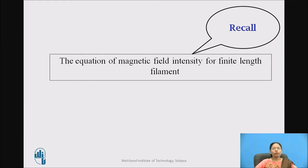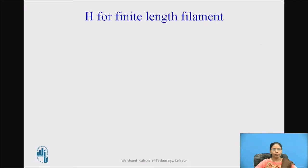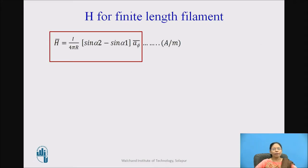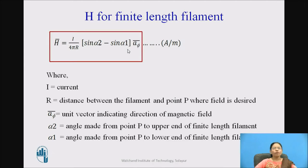We will now proceed to determine H bar for the finite length filament. Recall the equation: H bar equals I divided by 4πR times (sin α₂ minus sin α₁) times A_phi bar, with units of amperes per meter. Here I is current, R is the perpendicular distance between the point and the filament, α₁ and α₂ are the angles made from point P to the lower and upper ends of the filament respectively, and A_phi bar is the unit vector indicating the direction of the magnetic field.